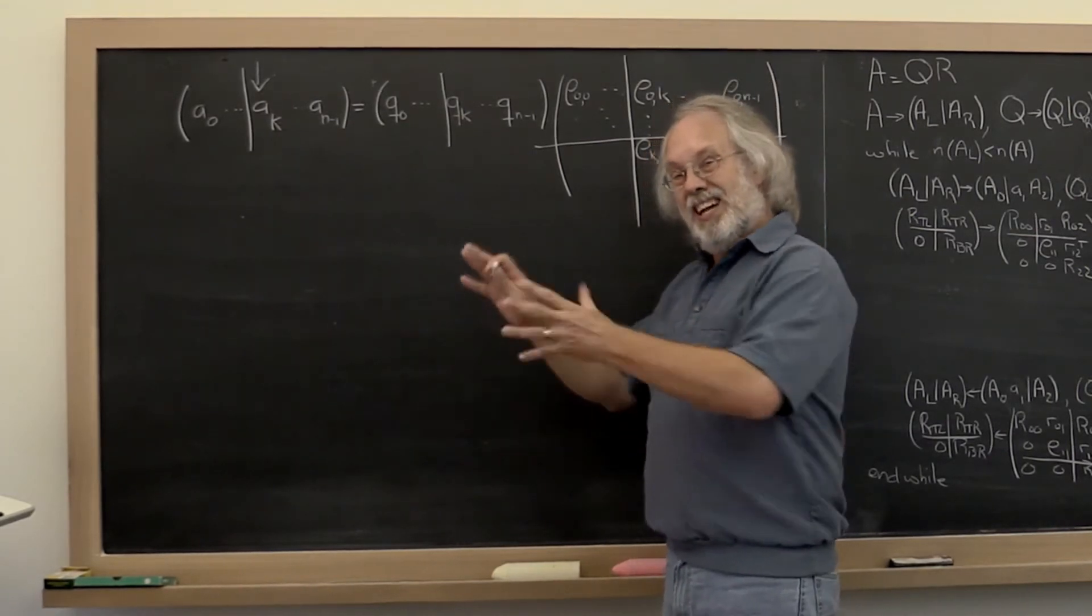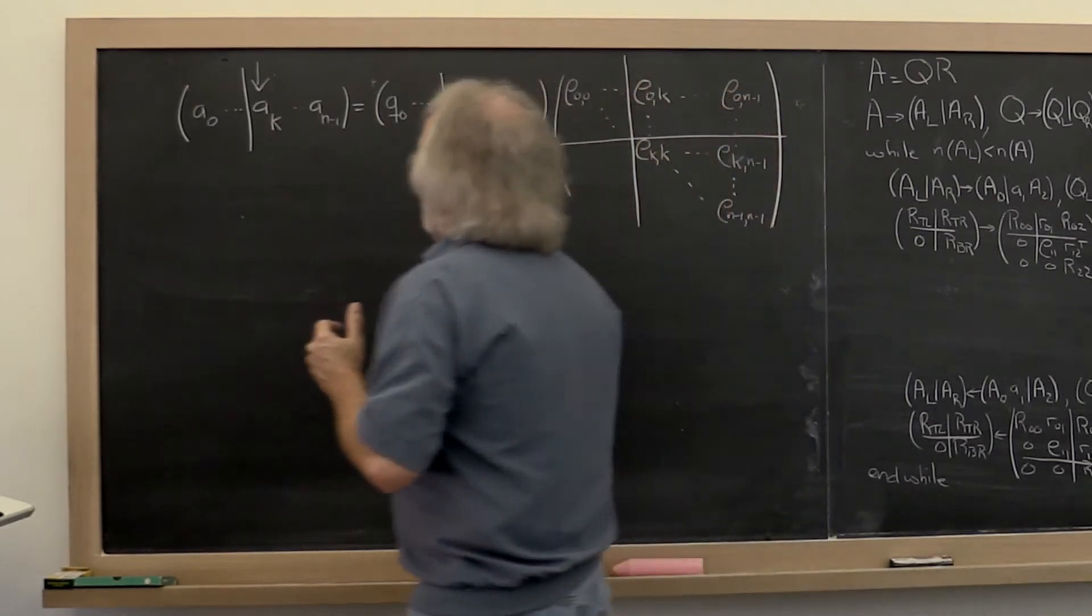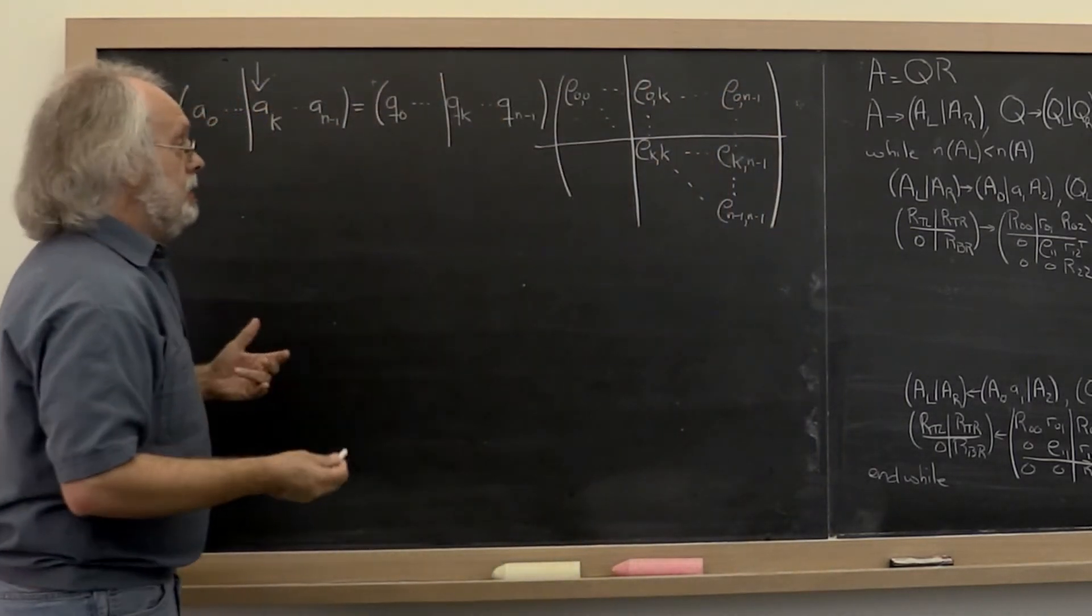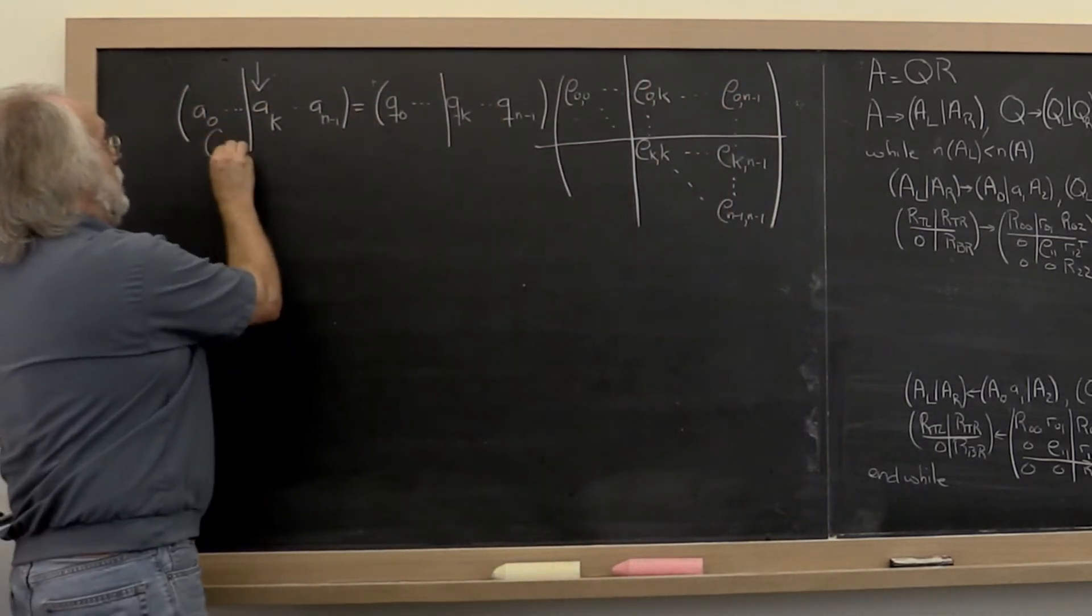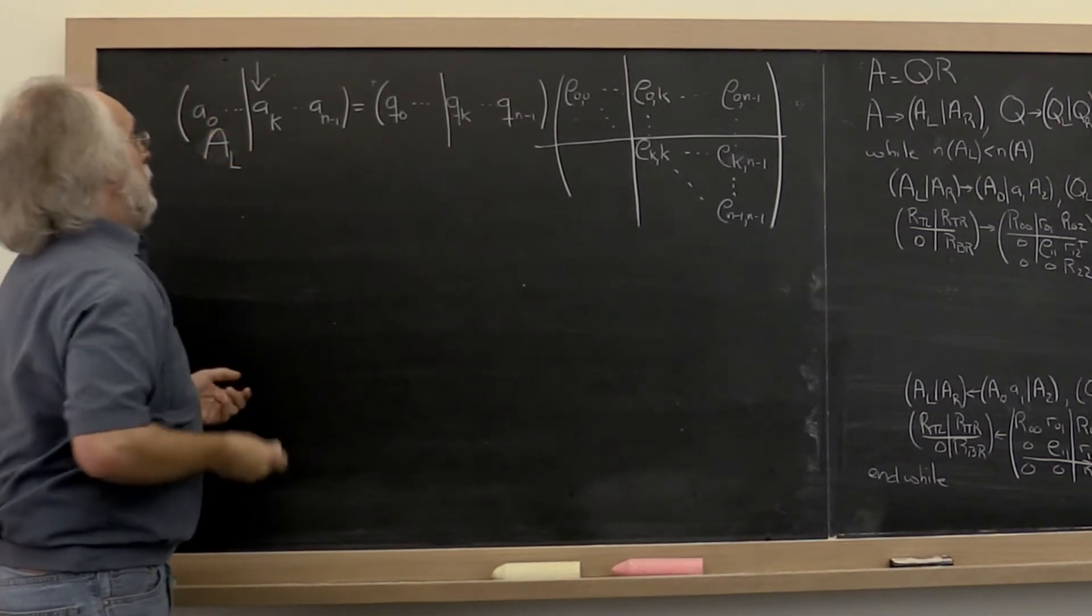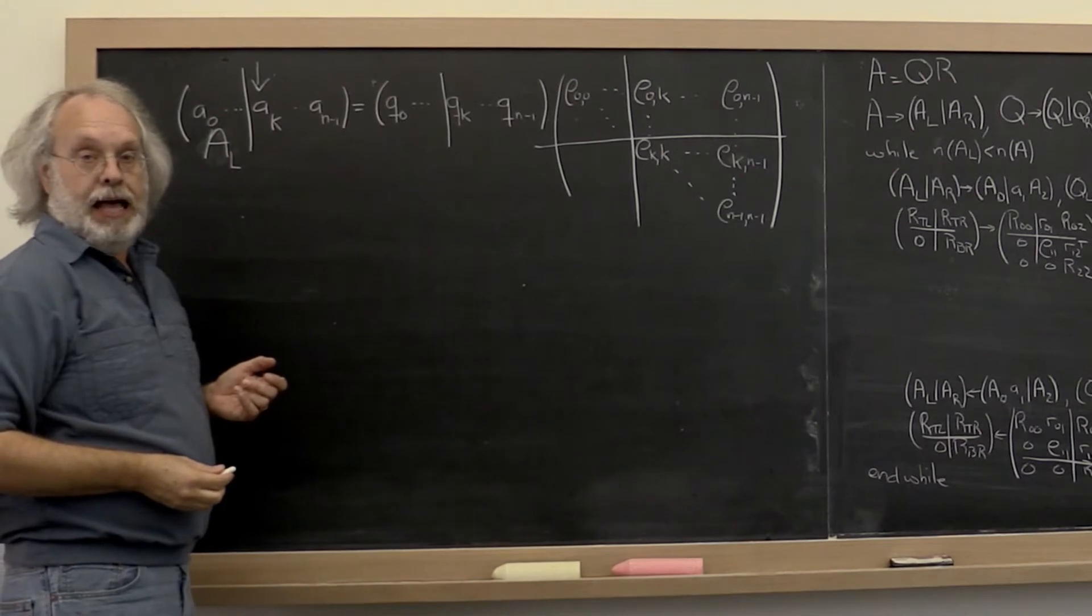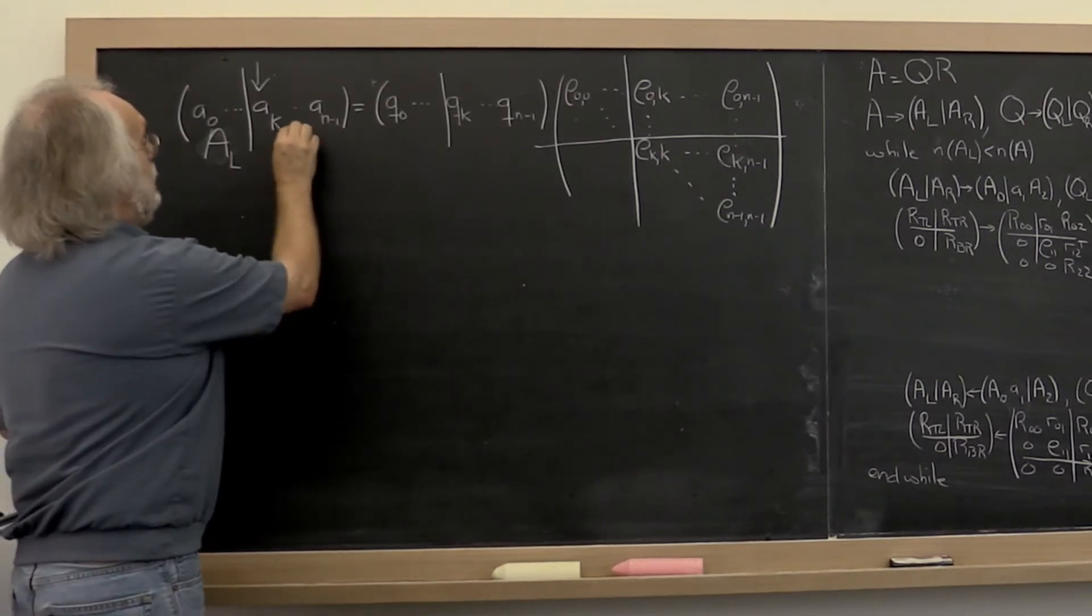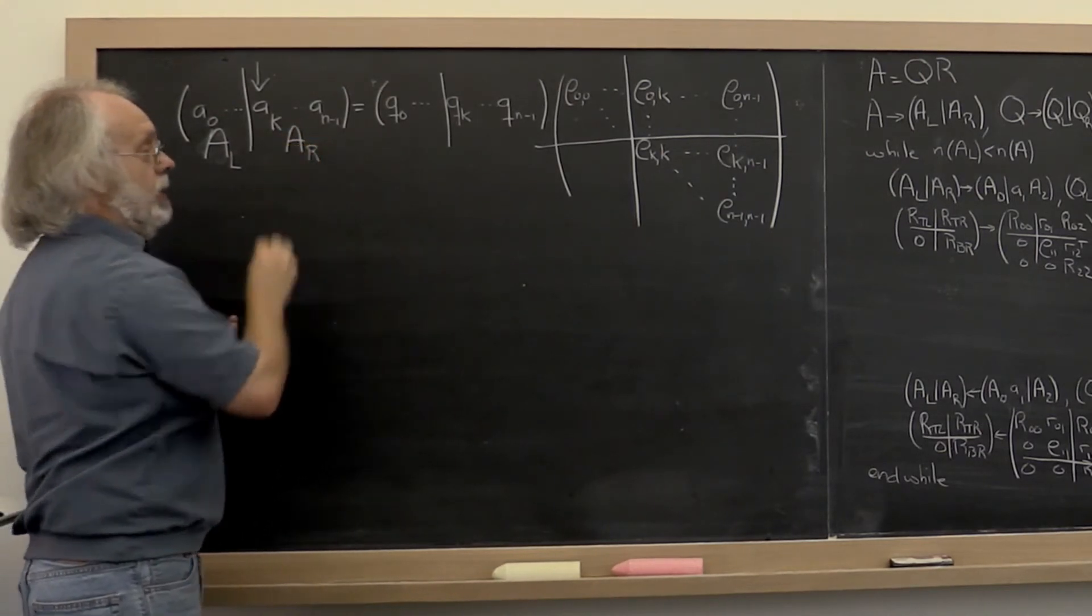Notice that inherently we're talking about regions. So the way we like to explain this is that this particular part of A we're going to label as A_L, A left, and this as A_R, A right.